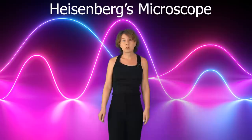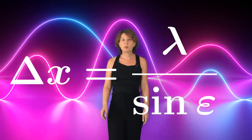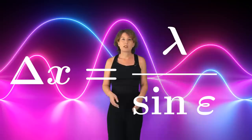This thought experiment was about measuring a single electron, something which was actually not possible at the time. The smallest distance you can resolve with a microscope, let us call this delta x, depends on both the wavelength of the light that you use, which I will call lambda, and the opening angle of the microscope, epsilon. The smallest resolvable distance is proportional to the wavelength, so a smaller wavelength allows you to resolve smaller structures. And it is inversely proportional to the sine of the opening angle. A smaller opening angle makes the resolution worse.